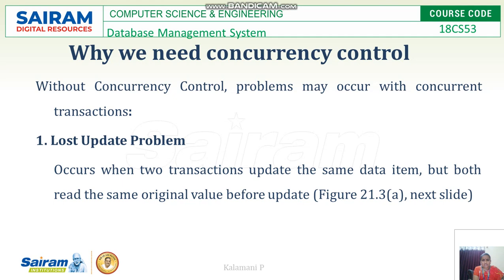Without concurrency control, problems may occur with concurrent transactions. The first problem is the lost update problem. It occurs when two transactions update the same data item but both read the same original value before the update.